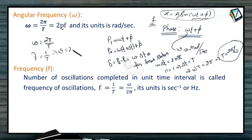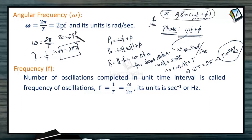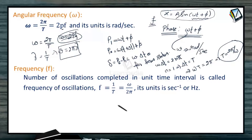So omega becomes 2 pi nu. You can also say omega is 2 pi f. Nu is the frequency which is in hertz.